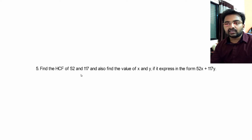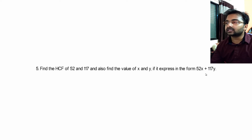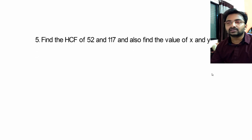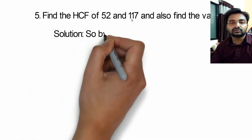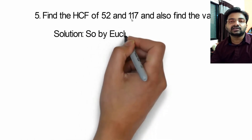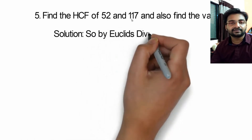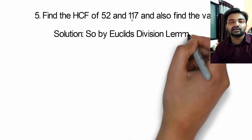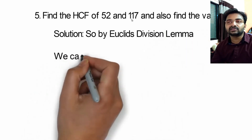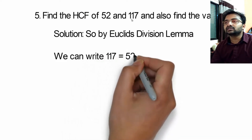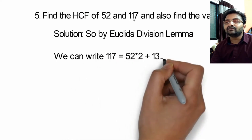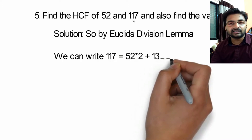The first part is to find the HCF of both numbers, and in the second part, we have to find the values of x and y. To do this, we will use Euclid's Division Lemma. In questions where we need to find x and y, we always use Euclid's Division Lemma. So we will take 117 as the dividend because 117 is greater than 52.